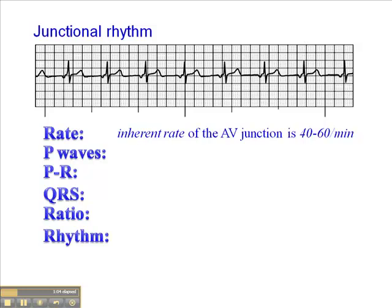Causes include ischemia, disease, electrolyte imbalance, drug effect, and others. Sometimes those other pacemaker sites fire at a rate faster than the SA node. If we see a junctional rhythm with a heart rate greater than 60, the term for that is an accelerated junctional rhythm. If the heart rate is 100 or greater, that would be a junctional tachycardia.